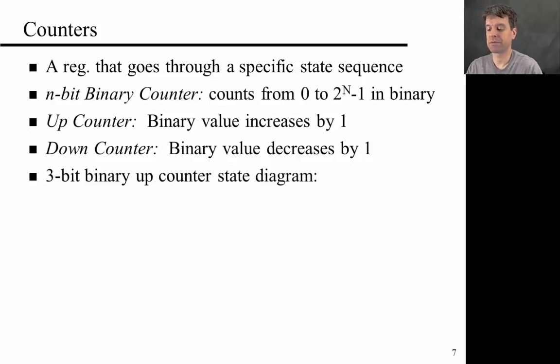A counter is a register that goes through a specific state sequence. An n-bit binary counter counts from 0 to 2^(n-1) in binary. An up counter is a counter where the binary value increases by 1. A down counter is a binary value where the binary value decreases by 1 at every step.